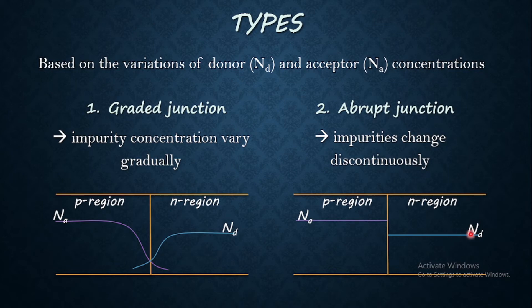In the same manner, in N region, N_D, that is the donor concentration, is constant throughout the N region. But at the interface, it drops to 0. And we can see that there are no donors in P region.